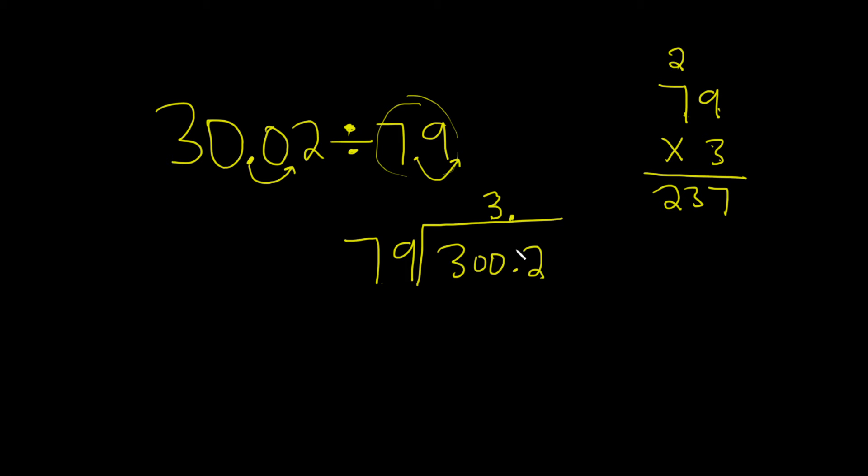Then you put a decimal here. 3 times 79 is 237. Then you subtract. You could try to do this in your head. I think it's 63. But let's do it the long way. 300, 237. And then subtract.